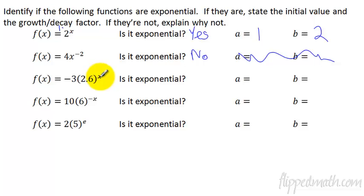Here we have the variable up here in the exponent. That's okay. The base is positive. The number can be negative in front. That's okay. So this one is yes. A is negative 3. The initial value is negative 3. And the growth factor is a 2.6.